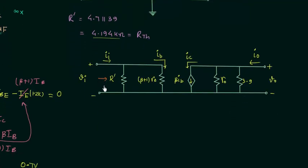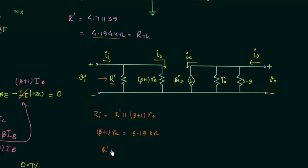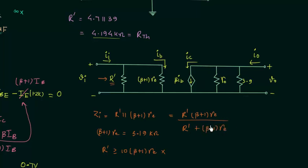The input impedance ZI is the impedance seen from the input terminals, equal to R' connected in parallel with (β+1)·Re. Here, (β+1)·Re equals 3.19kΩ and R' equals 4.194kΩ. For simplification, R' should be greater than or equal to 10 times (β+1)·Re, but this condition is not met here. So we calculate ZI directly as R' multiplied by (β+1)·Re divided by R' plus (β+1)·Re, giving input impedance ZI equal to 1.811kΩ.